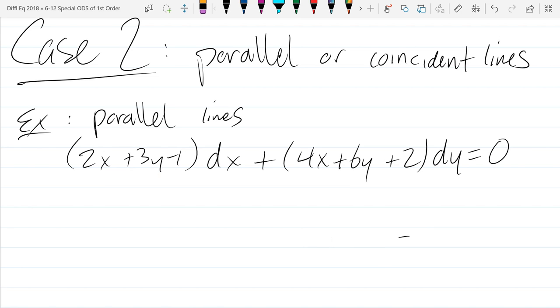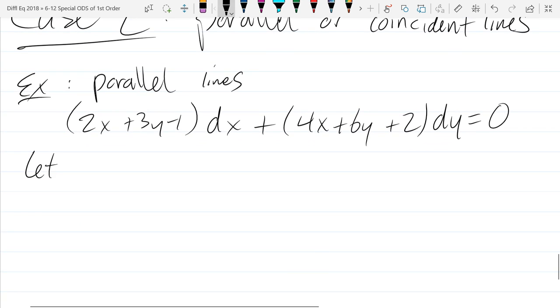If they were the same line, my second line would be having what constant? It would have a minus. That would be the exact same line. But as it happens, just the kind of slope part. So here's how we're going to deal with parallel lines. Let u equal 2x plus 3y minus 1. Now what we have on the other side is 2u, except not quite. It's almost 2u. It's off by a constant.